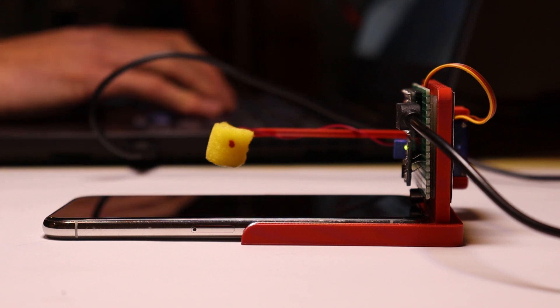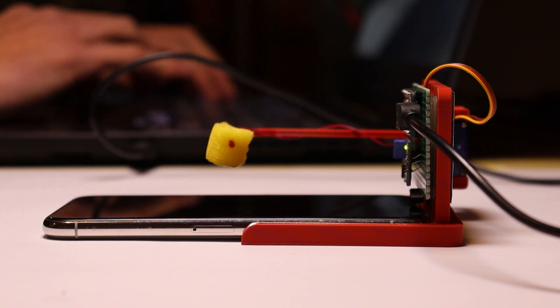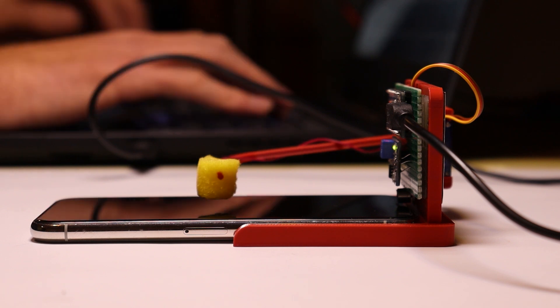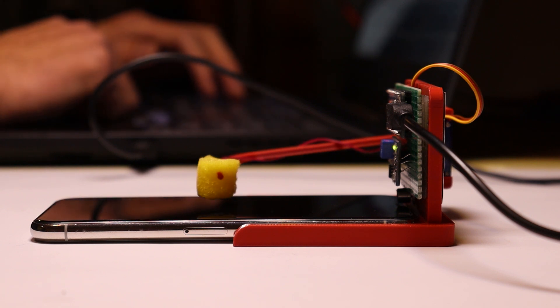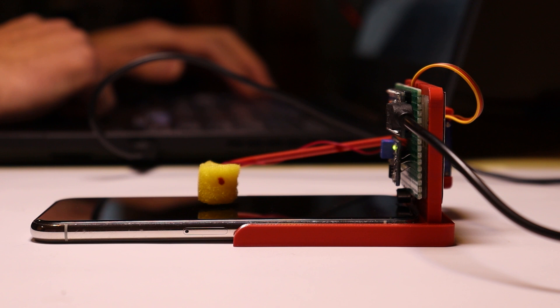Next, I wrote some simple code for the arm movement to test the moving capabilities so that I can later calibrate the arm to the point where it makes the best contact with the phone's screen and successfully snoozes the alarm off.